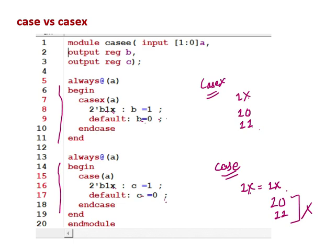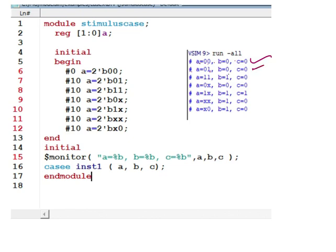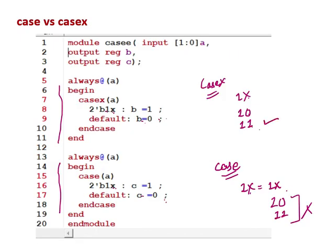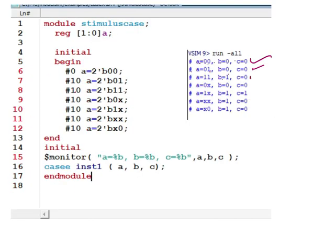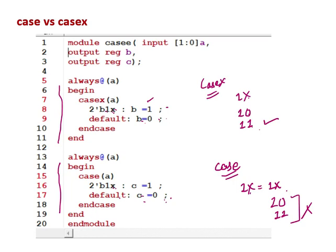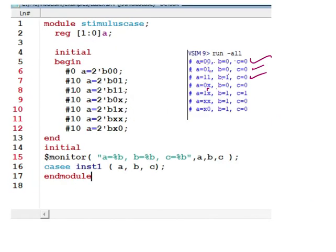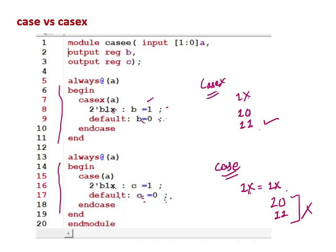At 20 ns, a = 2b11 — this matches case 1,1 so b=1, and there is no match in casex so c=0; result: b=1, c=0. At 30 ns, a = 2b0x — there is no 0x in the case, so default: b=0, c=0. At 40 ns, a = 2b1x — 1x is matching, so b=1 and c=1.